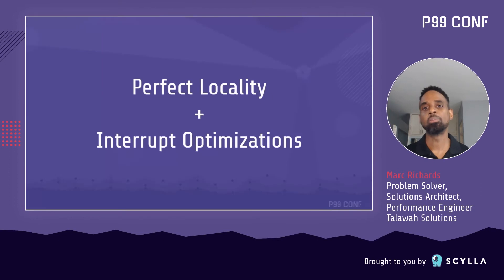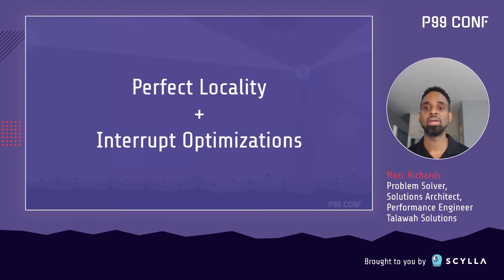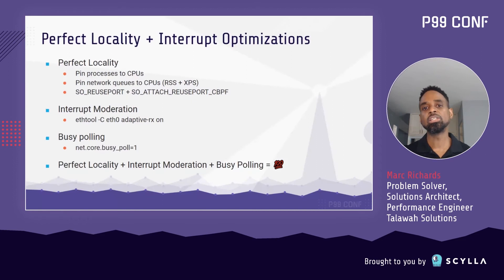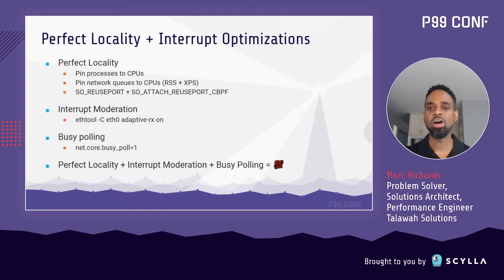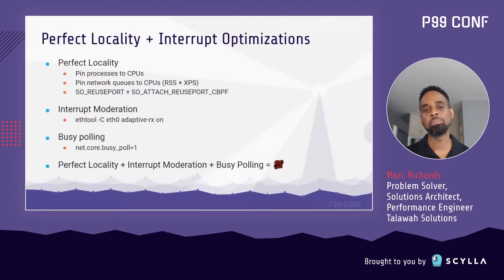Next up, we're going to cover perfect data locality and interrupt optimizations. These two are about making relatively small changes that dramatically streamline when and where data gets processed. In order to achieve perfect data locality, we're going to try and create distinct silos where each CPU gets paired with a network queue. This focus on data locality improves efficiency by maintaining CPU cache warmth and eliminating lock contention.